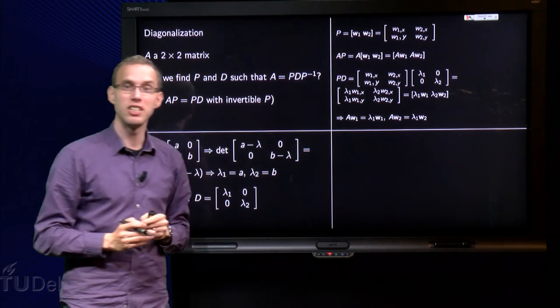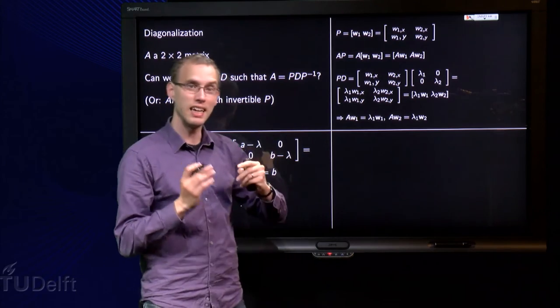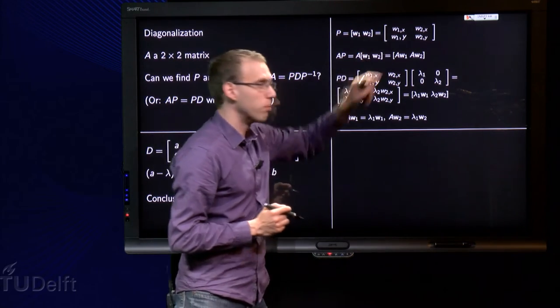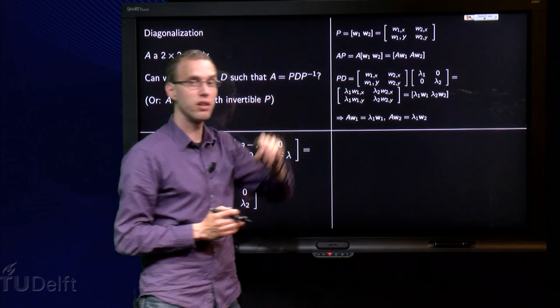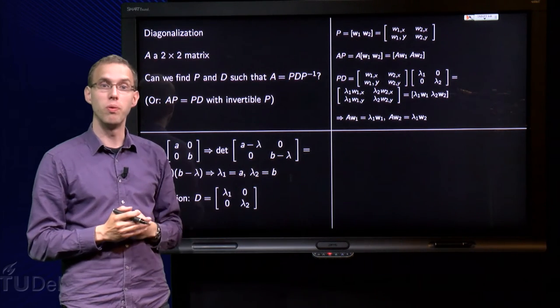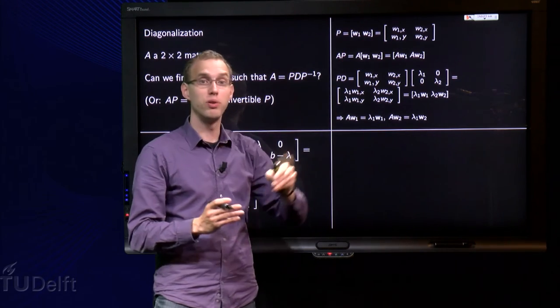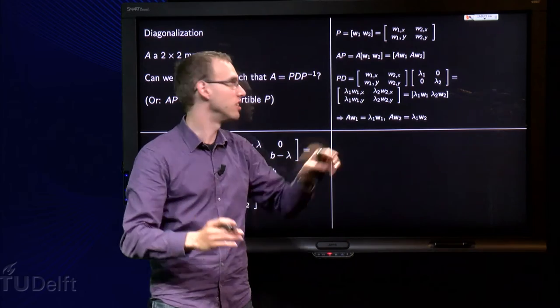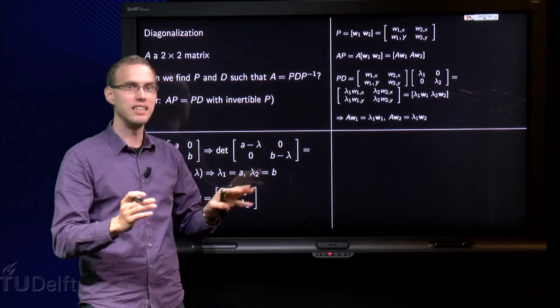Let's say P consists of the columns w₁ and w₂. And let's indicate them by the components w₁ₓ, w₁ᵧ for the first column and w₂ₓ, w₂ᵧ for the second column vector. And now you see by the way why we do this in a 2×2 case, because for larger matrices this would become a lot larger. But the idea is exactly the same.